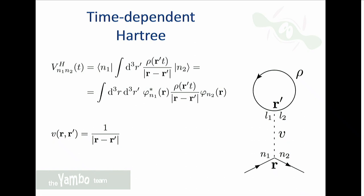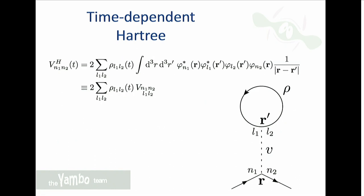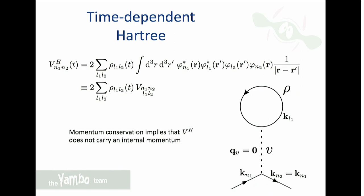Let's start with the time-dependent Hartree term. It can be written and then expanded in a single-particle basis — this is like a Feynman graph where the line is the Coulomb interaction and this is the density, a Green's function starting and ending at the same position. We expand the density into the single-particle basis, and all the wave functions appear inside the integral while the time-dependent part is outside. An important observation: in momentum space the Coulomb interaction cannot carry any momentum because momentum conservation requires the density to start and end with the same momentum, so this Hartree term will always be at q equals zero.